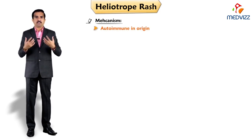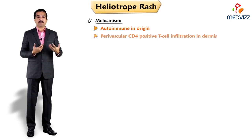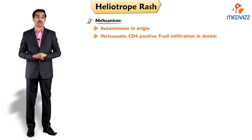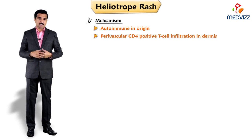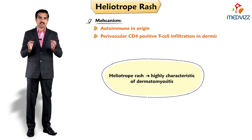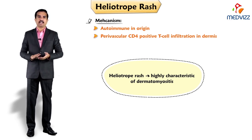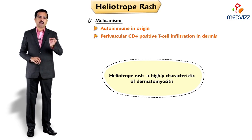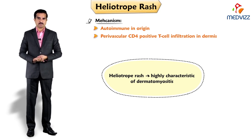The skin lesions demonstrate a perivascular CD4-positive T cell infiltration in the dermis. Despite limited data, the heliotrope rash is highly characteristic of dermatomyositis and should trigger further diagnostic evaluation. This is what we need to know about heliotrope rash, which gives an important diagnostic clue for dermatomyositis.